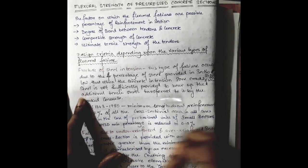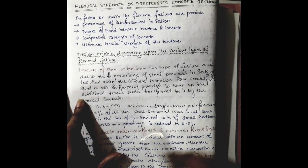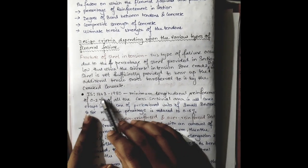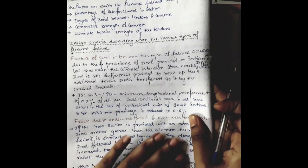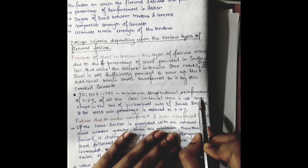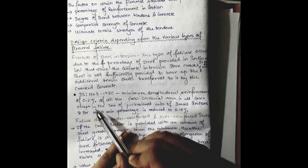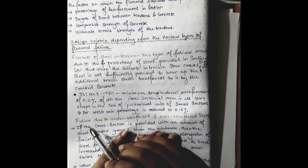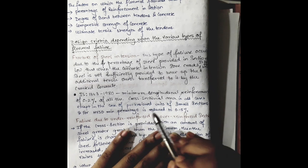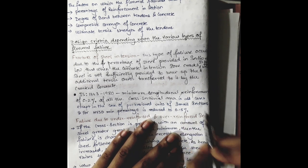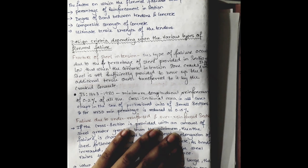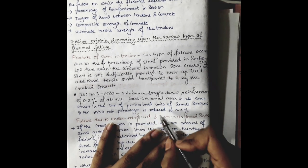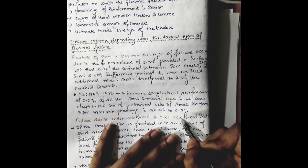When the concrete in tension zone cracks, the steel is not sufficiently provided to bear up the additional tensile stress transferred to it by the cracked concrete. In IS 1343, it has been provided that the minimum longitudinal reinforcement of 0.2 percent of the cross-sectional area in all cases, except the case of pretensioned units of small section, should be provided. In the case of HYSD bar, minimum percentage is reduced to 0.15 percent.